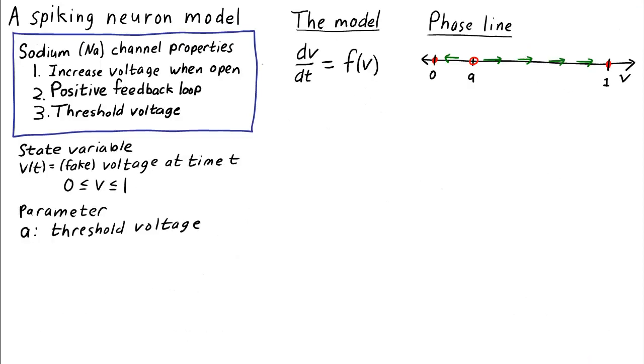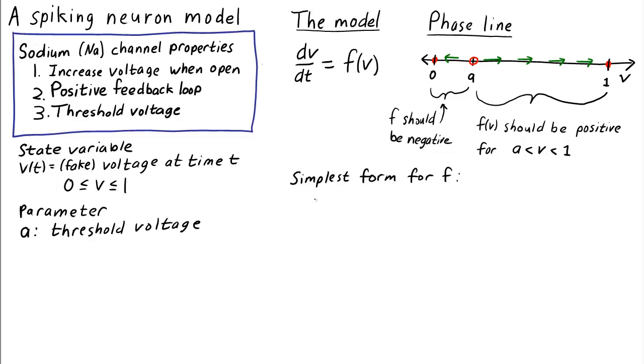To get this behavior in the phase line, what should the function F look like? F should be positive in the interval where V is between A and one and should be negative elsewhere. The simplest form of such an F is a cubic.